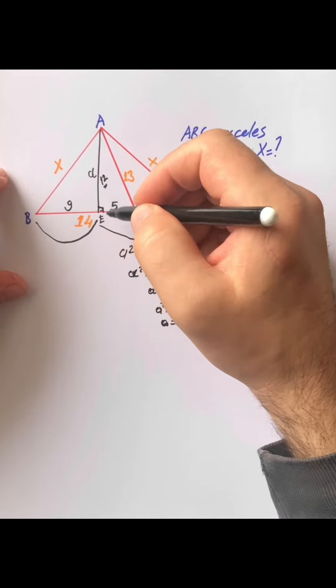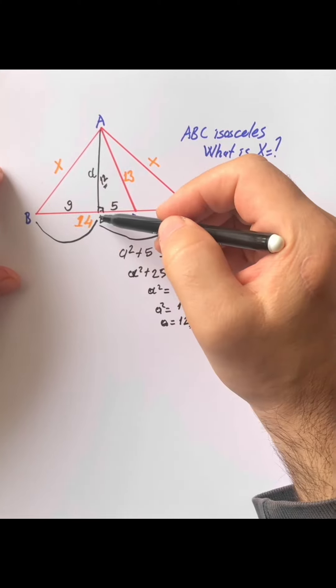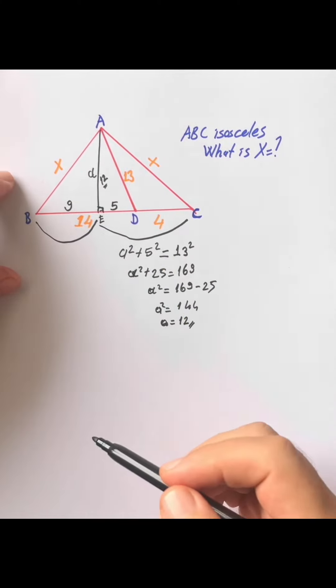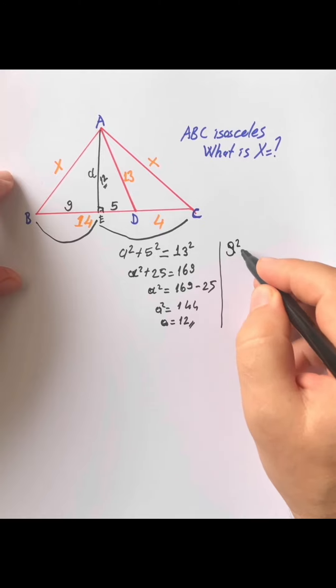So when we use Pythagorean theorem in ABE triangle, I am going to write here. So nine squared plus twelve squared equals X squared.